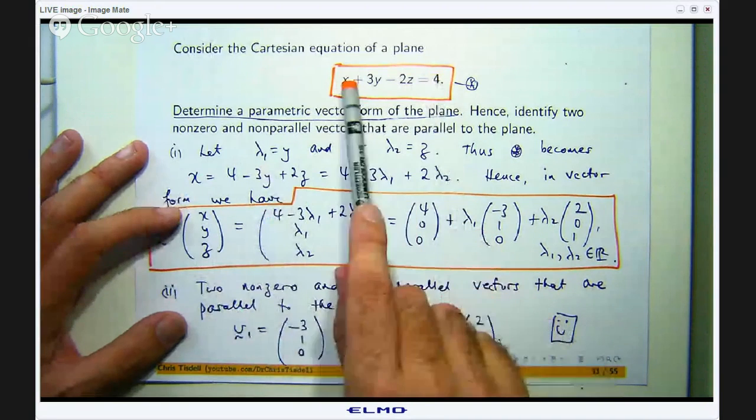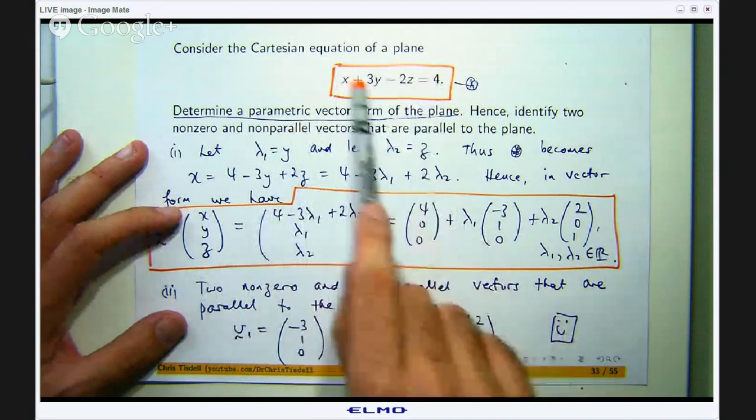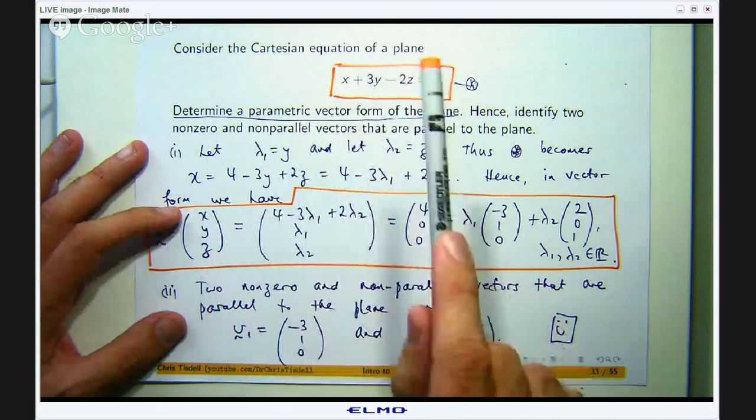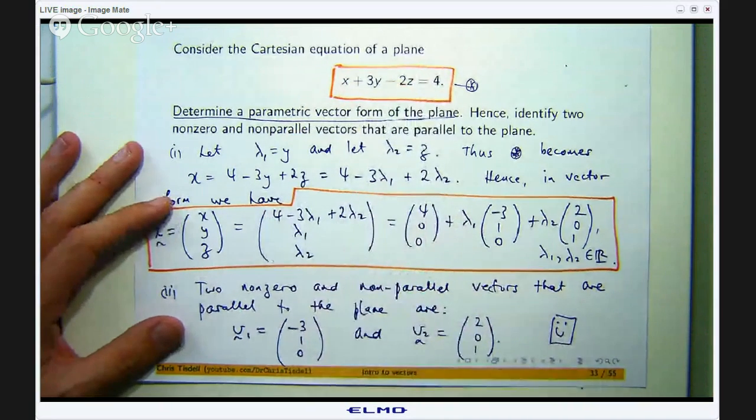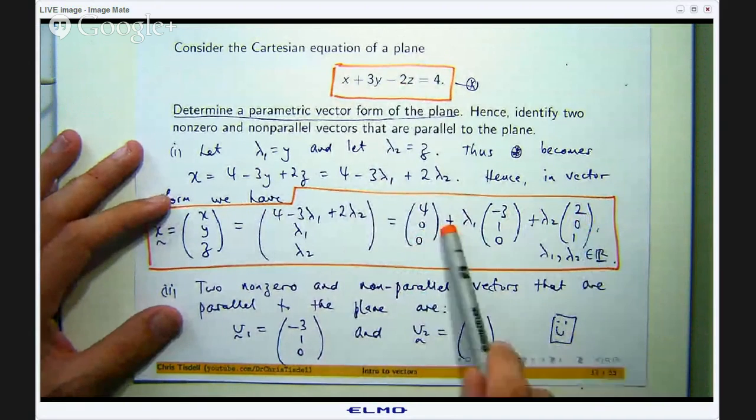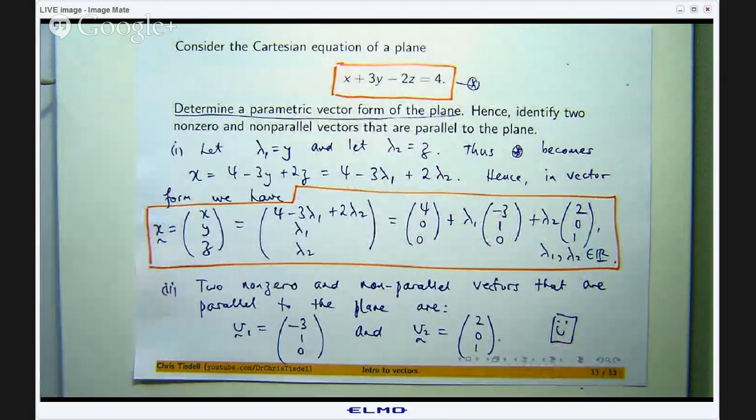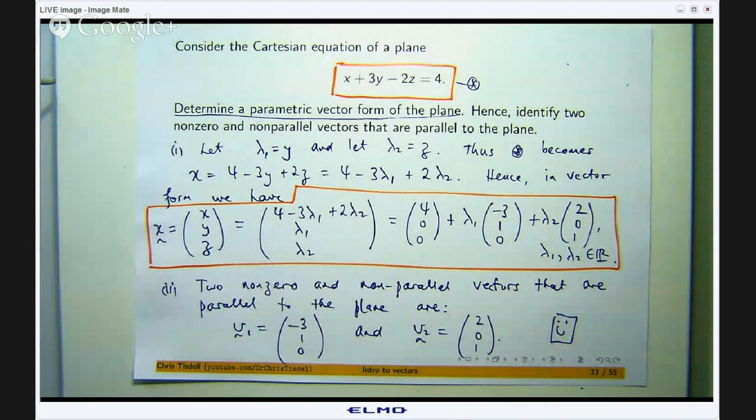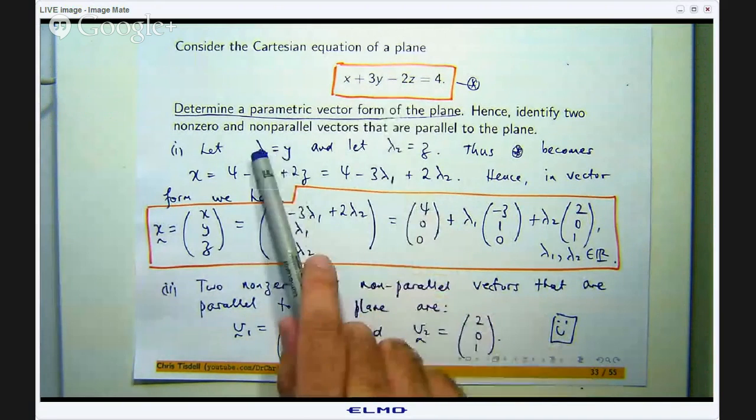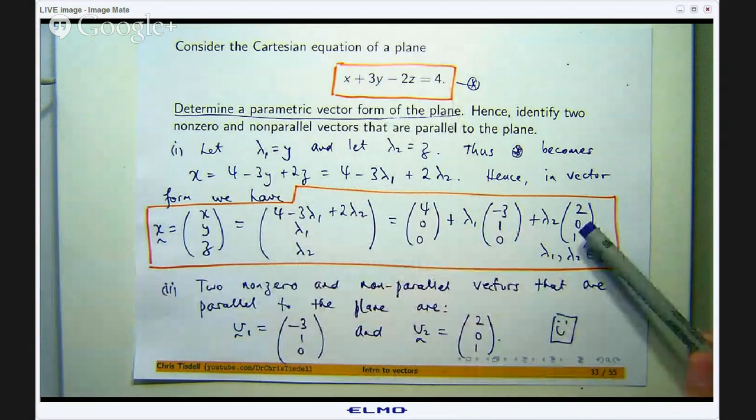If I had made, say, x equal to λ1 and y equal to λ2, when I rearranged this to make z the subject, I would have to divide by that negative 2. So that means there would be sort of divisions by a half or negative 2 in here. I guess that is just a cosmetic reason for me. But as long as you let λ1 and λ2 be any of the two variables here, then you will come up with a parametric vector form.